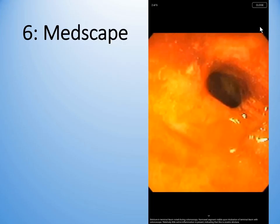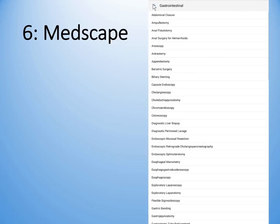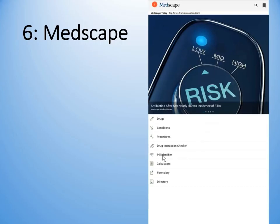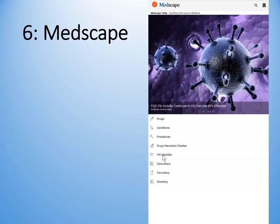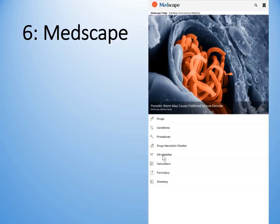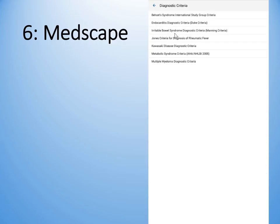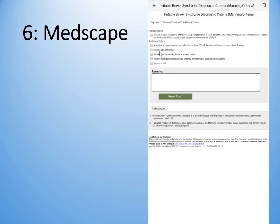The drug interaction checker is very similar to Epocrates, so I'm not going to go into that. The pill identifier will also take you a while to scroll through the hundreds of pills that are retrieved. The calculators is an aspect I wanted to show you. Let's have a look at diagnostic criteria — irritable bowel syndrome. What are the diagnostic criteria, and let's see if this particular patient has these criteria? I'm going to click some of these criteria just to see if the patient qualifies for irritable bowel syndrome.